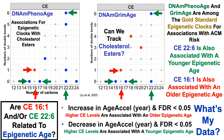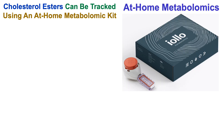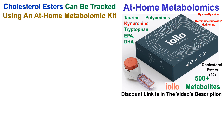Cholesterol esters can be tracked using an at-home metabolomics kit — the IOLO kit. If you're familiar with the channel, I've made videos using this kit for taurine, polyamines, kynurenine, tryptophan, EPA and DHA, and metabolite ratios as an index of oxidative stress. In addition to these metabolites, the kit measures more than 500 metabolites including 22 cholesterol esters. Discount link is in the video description.